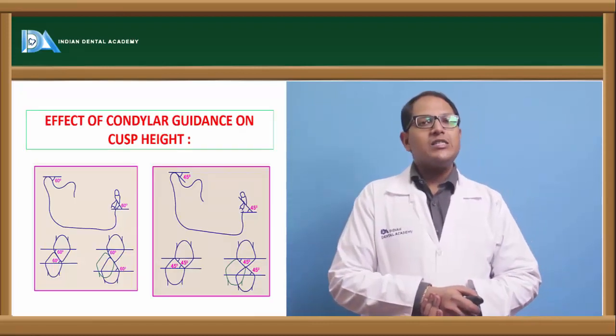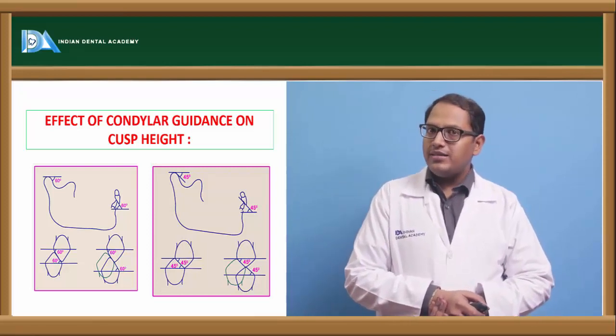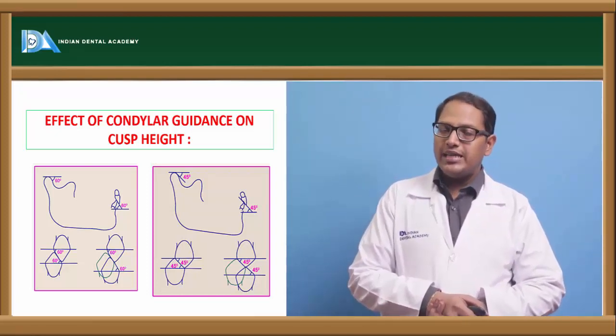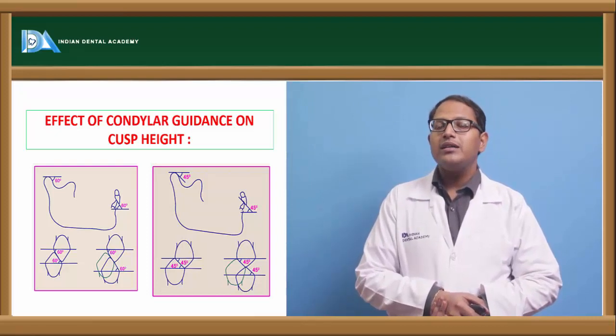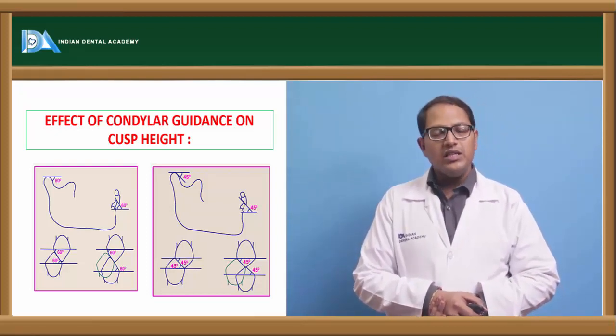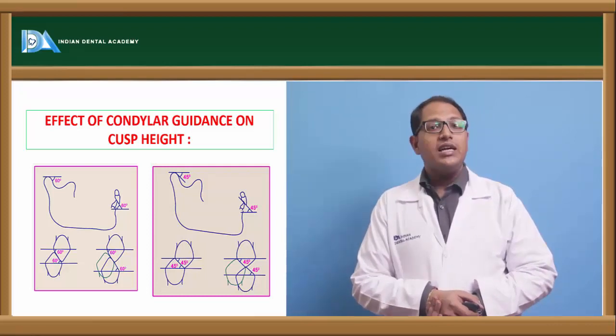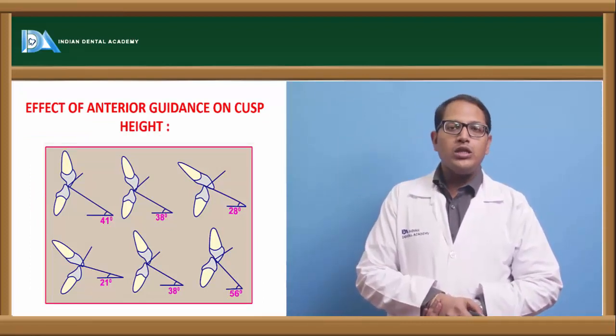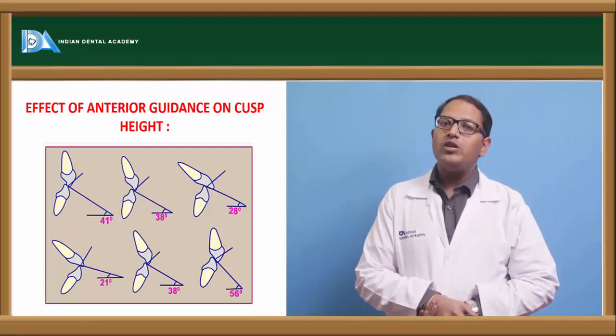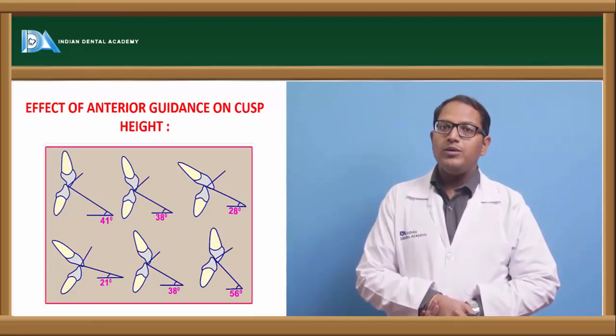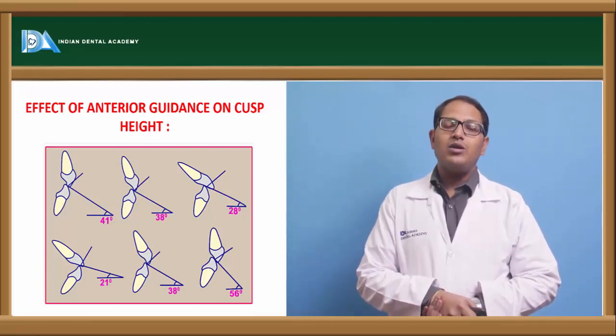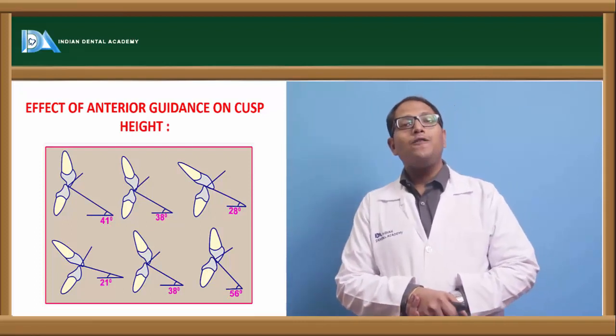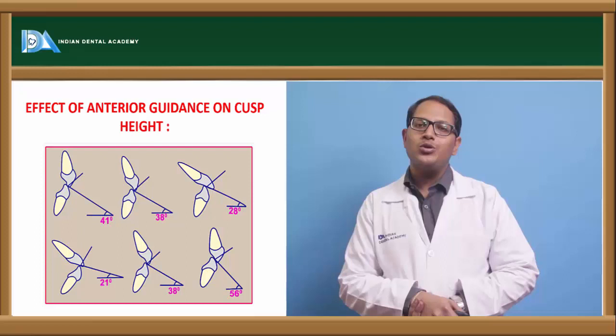Is the cuspal height influenced by condylar guidance? If condylar guidance increases, will the cuspal height increase? Yes, of course. When the condylar guidance is increasing, there is more steeper condylar guidance, more steeper compensating curve, more steeper plane of occlusion, hence the cuspal height will also increase. Anterior guidance effect: more the overjet, more the overbite, more will be the height of the cusp, more will be the longer teeth selected and the crown size. This will affect the stability of the crown, offset load on the crown, and the crown root ratio will be hampered.